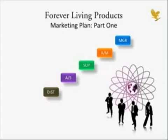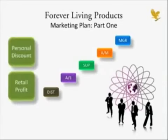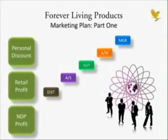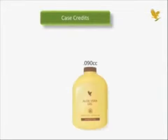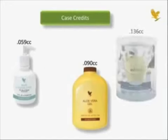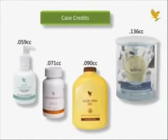In this training module we will explain the personal discount, the retail profit, NDP profit, personal bonus, and group bonus portions of the marketing plan. First, let's explain how we measure sales volume in FLP. Our sales volume is measured in case credits. Each product has an assigned case credit value, and since your activity is reflected by your purchases, these case credit values are accumulated as product is purchased to determine advancement in the marketing plan as well as qualification for other incentives.